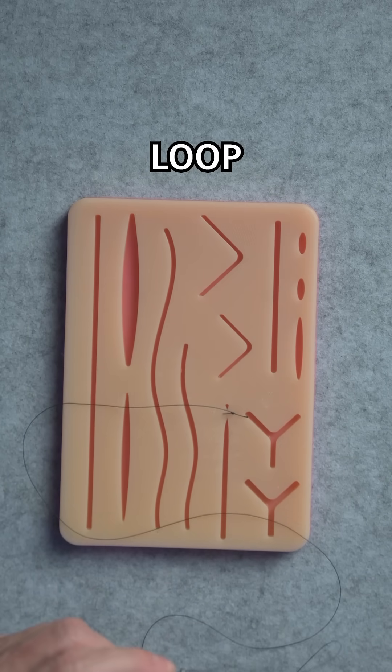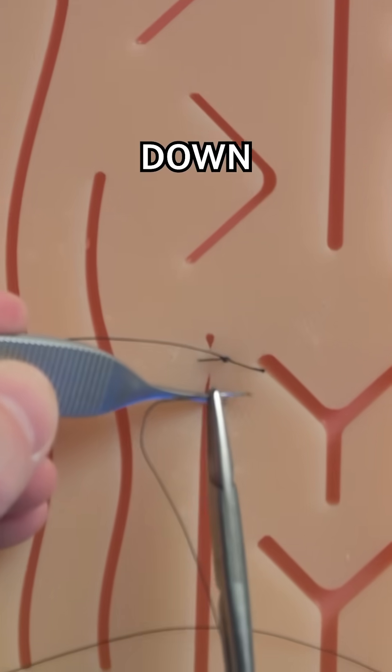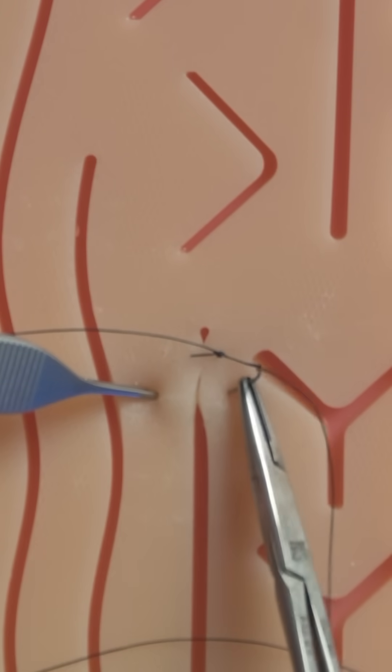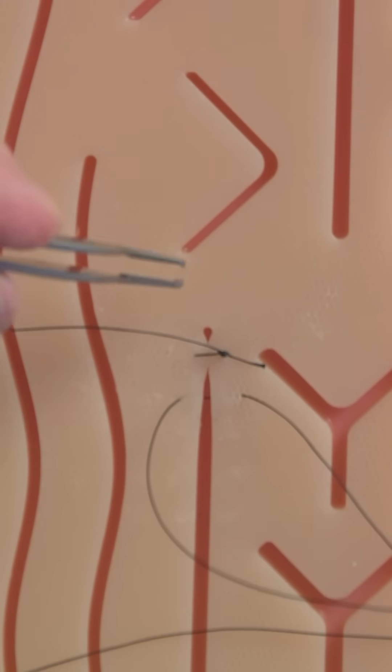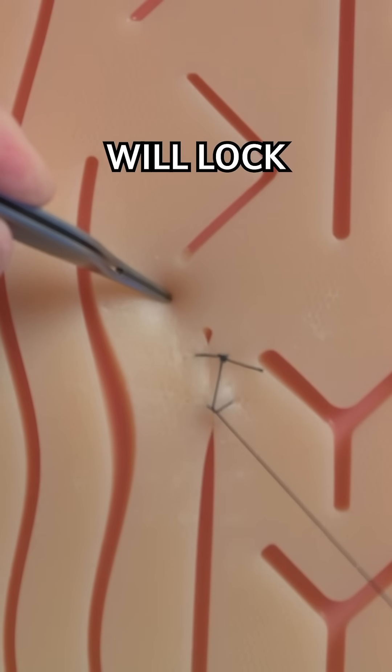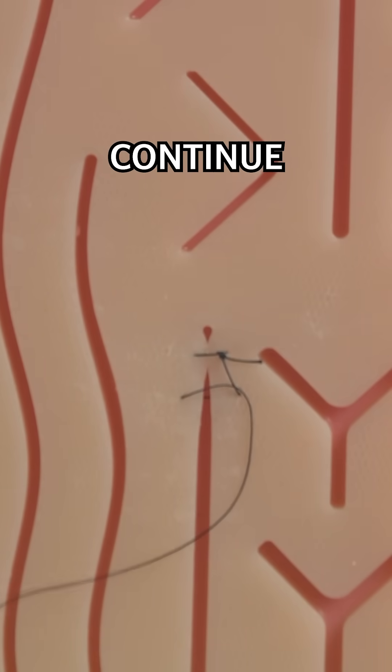We'll leave a slight loop to create the lock and move our needle down half a centimeter. That loop will lock and we continue this process.